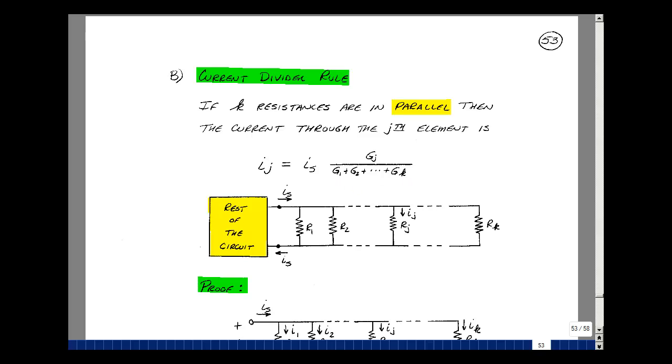You may notice that this sounds very similar to the voltage divider rule, except that current is replacing voltage, parallel is replacing series, and conductance is replacing resistance.